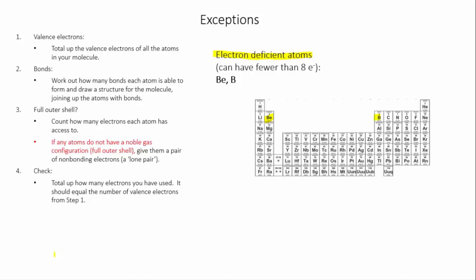Our second exception are non-metals in period three and below. So that's things like sulfur and phosphorus and chlorine and bromine and so on. These guys are what's called hypervalent, meaning they can actually have more than eight electrons in their outer shell. The reason is that because they're in period three and their outer shell is now the third electron level, they have access to d orbitals, which the period two elements don't.